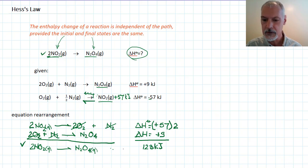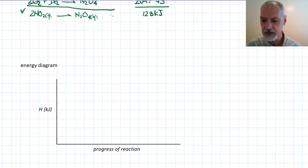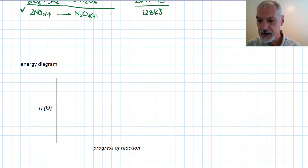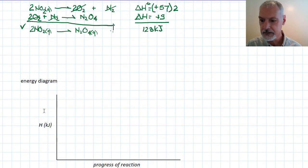I'm just going to show that represented another way in an energy diagram here. What I'm saying then is if I start my reaction with 2NO2, this material, and if I add to it two times 57 kilojoules, I will end up here with two oxygen gas and nitrogen gas.